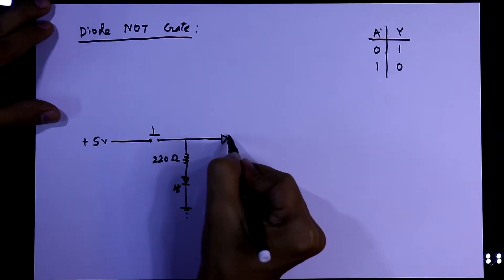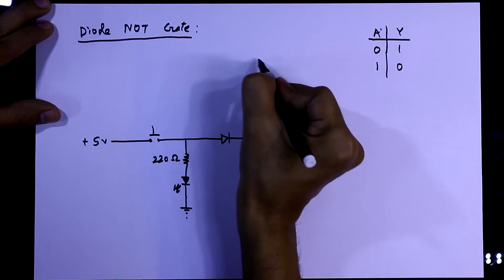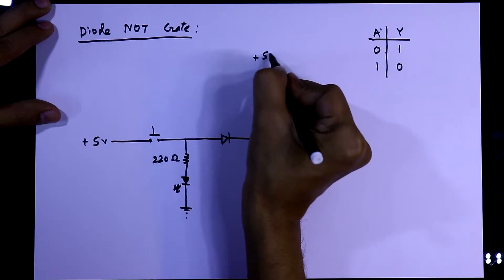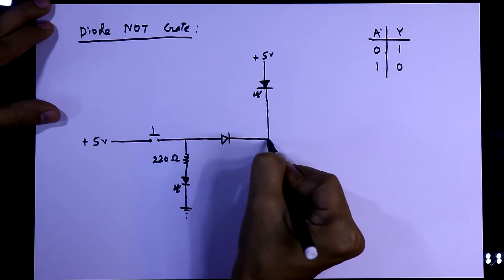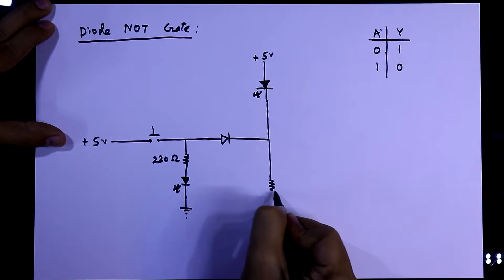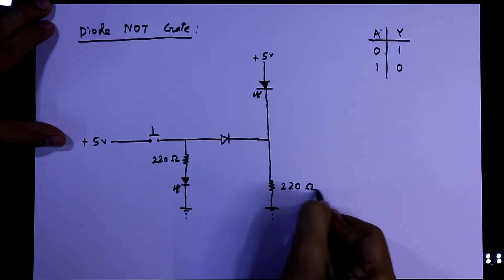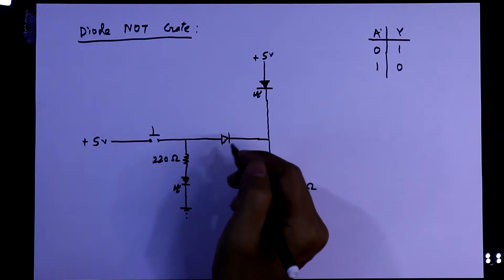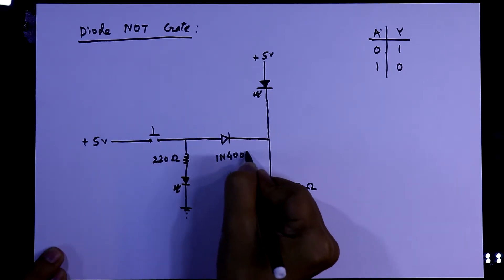And then here, we will use this diode. To see the output, we will use another LED. The positive pin of the LED will be connected to the plus 5 volt. And this will be connected to here. And then we need another resistor, and this is 220 ohms. This is normal silicon diode 1N4007.